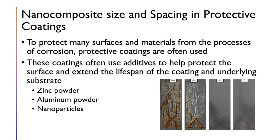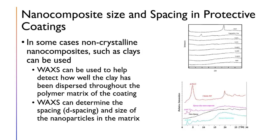Wide-angle diffraction techniques are often used to measure non-crystalline and semi-crystalline materials. In this example, we look at how this technique is used to characterize protective coatings, which are used to prevent corrosion and other degradation from affecting metallic substrates. These coatings often use additives such as zinc powder, aluminum powder, or various nanoparticles. In some cases, non-crystalline nanocomposites such as clays can be used as nanoparticles, making wide-angle diffraction the preferred method to characterize such coatings due to their non-crystalline nature.